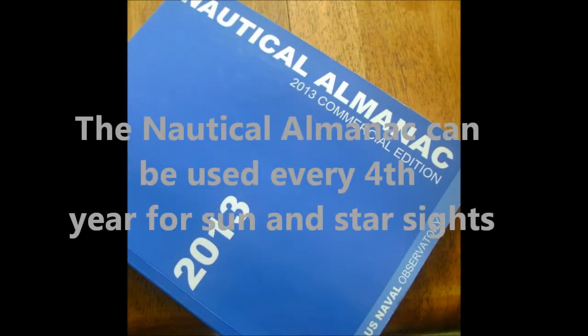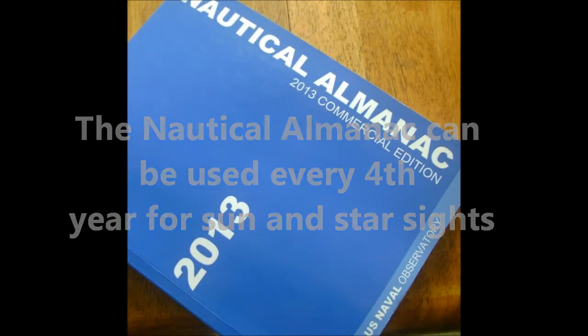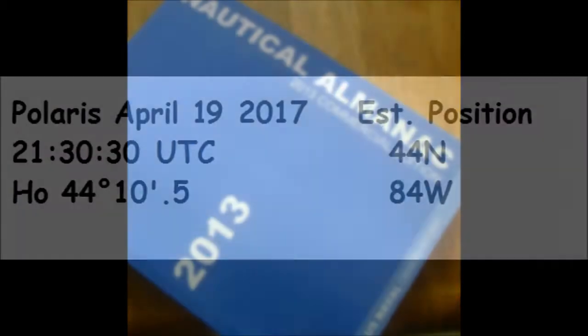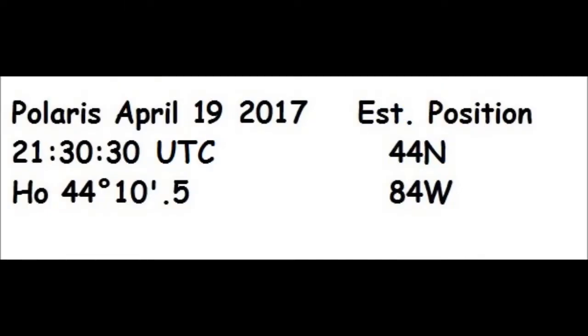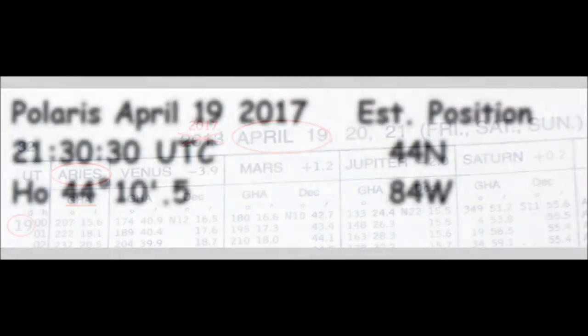The nautical almanac is good every fourth year. The date of our Polaris sight is April 19th, 2017. The time was 2100 hours 30 minutes 30 seconds UTC. Our estimated position is 44° North, 84° West, and after appropriate sextant corrections our HO is 44° 10.5 minutes.